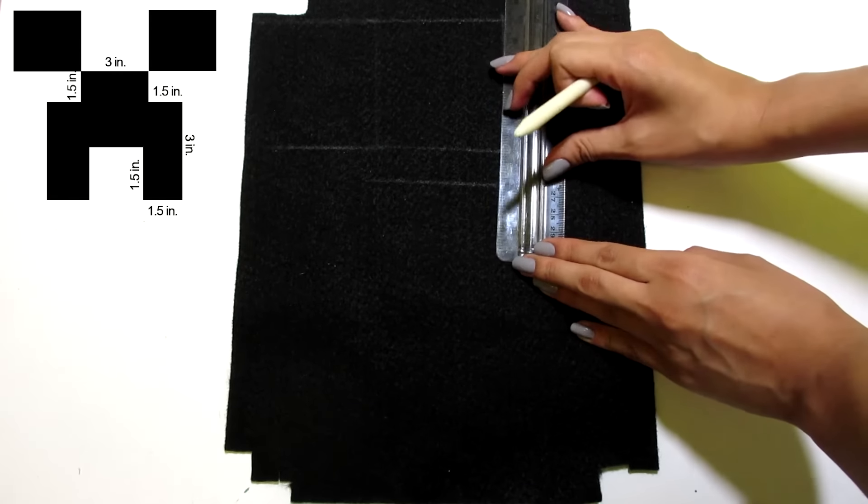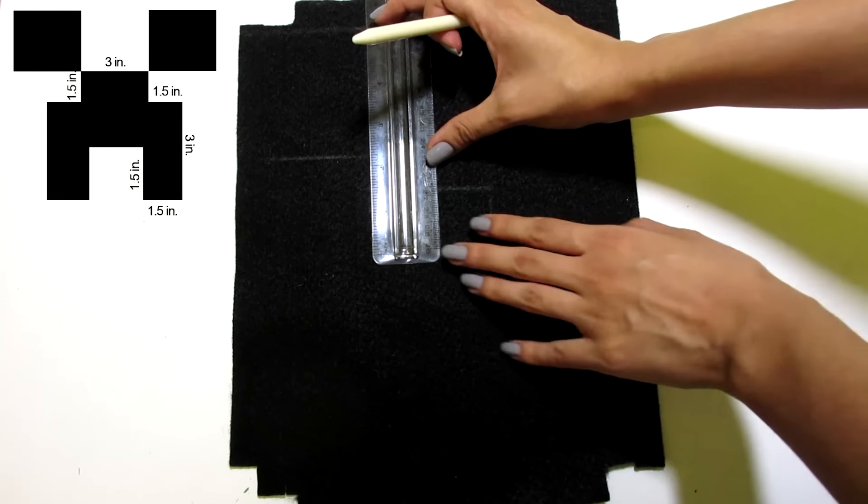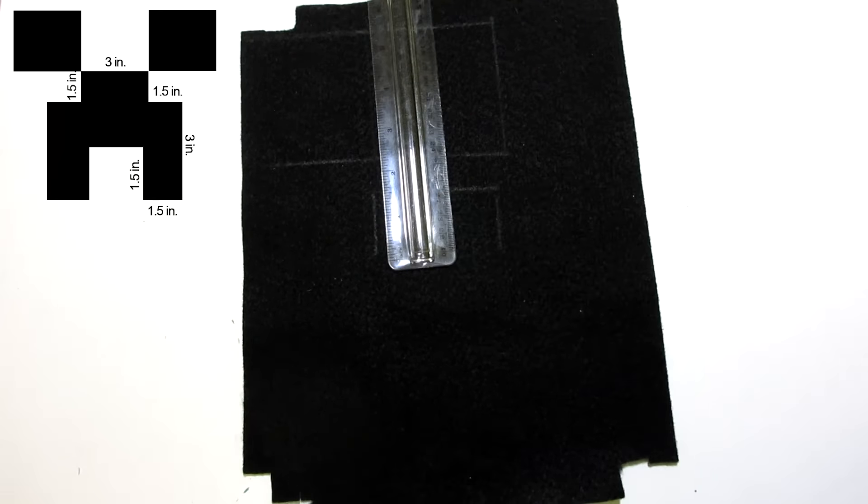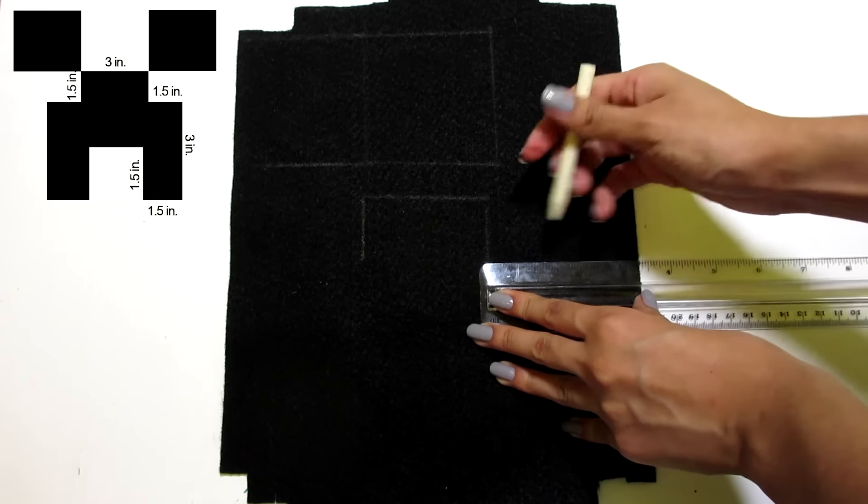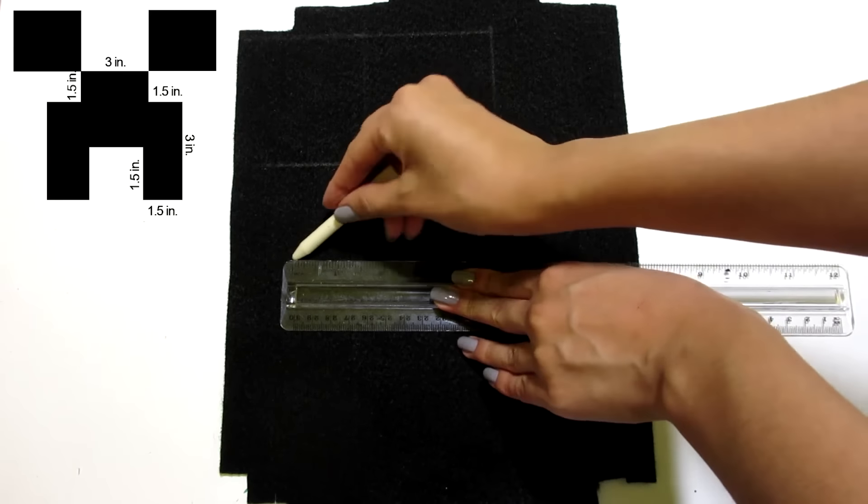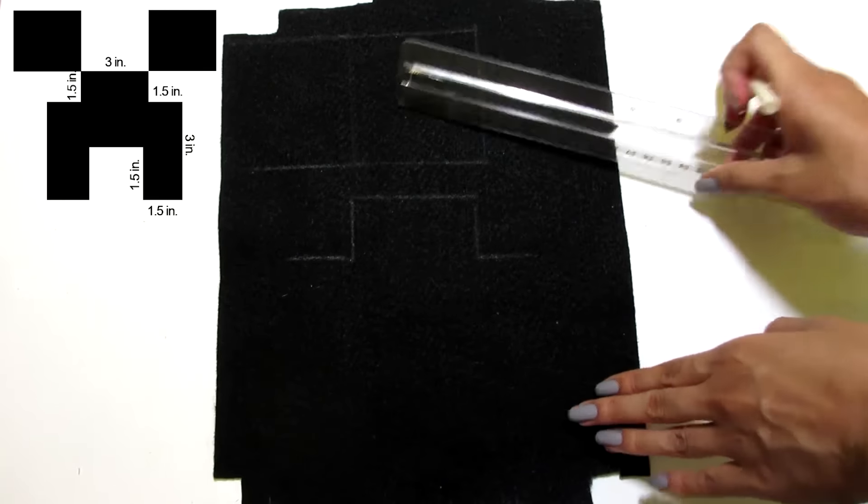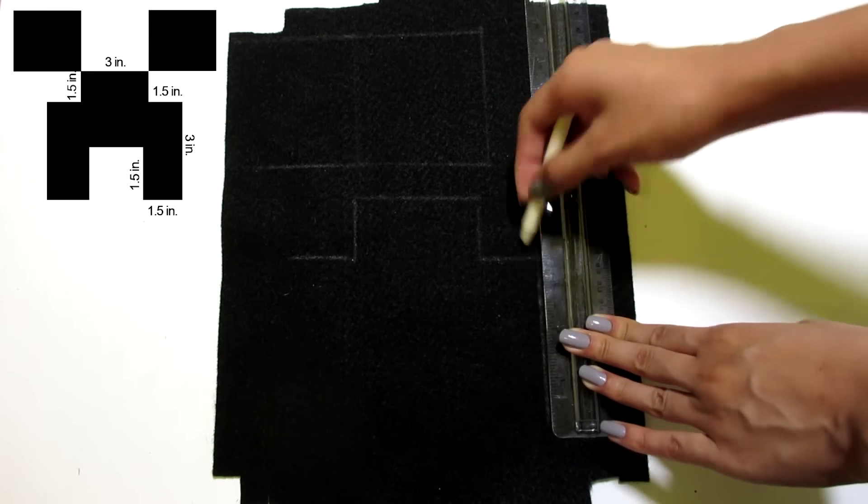From each end, draw a 1.5 inch line going down. From that point, draw a 1.5 inch line going out to the right and do the same on the opposite side going to the left. Now on the right side, draw a 3 inch line going down and do the same on the left.